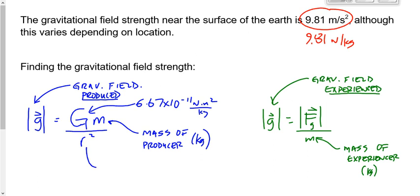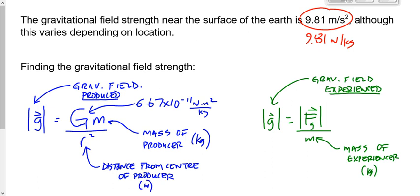R stands for the distance from the center of the producer. That's going to be in meters. The gravitational force experienced by the object — in this case the board marker a certain distance above the surface of the Earth — where M is the mass of the board marker and F is the force of gravity that the board marker feels, the gravitational force experienced.